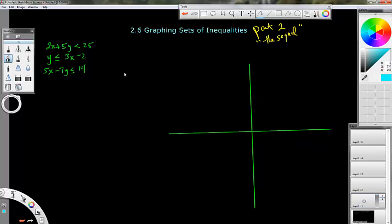All right, here's part two of graphing sets of inequalities. We've got multiple inequalities. We're going to put them all in the same graph and shade them all three different directions and see where the area of overlap is.